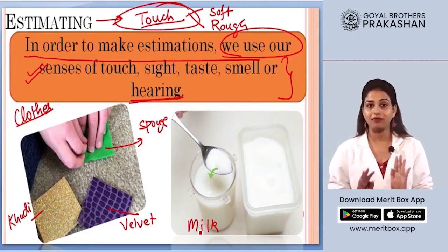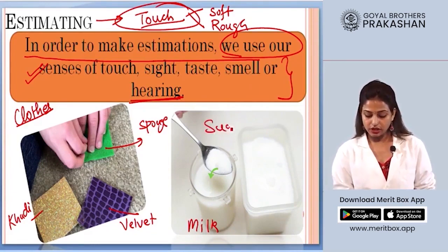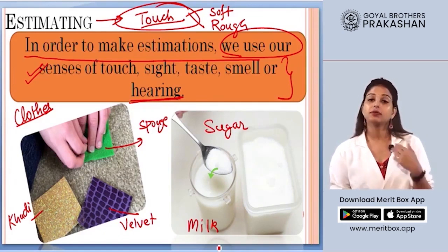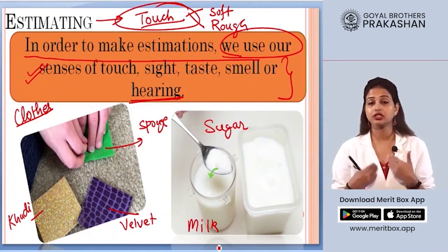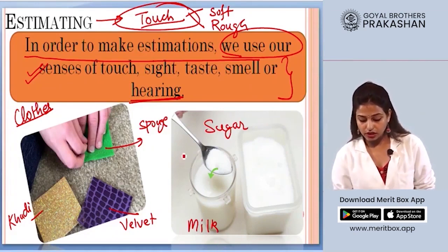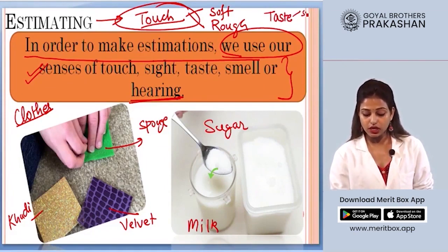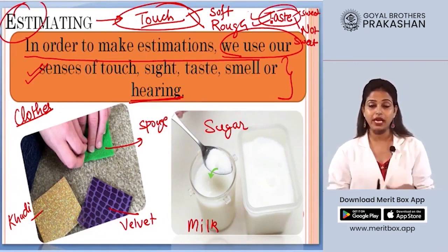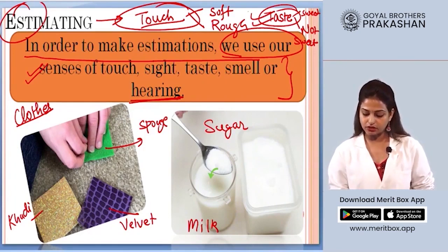On the other hand, consider a glass of milk. Your mother generally adds sugar to sweeten it. She can add one spoon or two spoons depending on your preference. How sweet the milk has become depends on your sense of taste. So your estimation of sweetness depends on your sense of taste. Estimation depends on our sense organs.